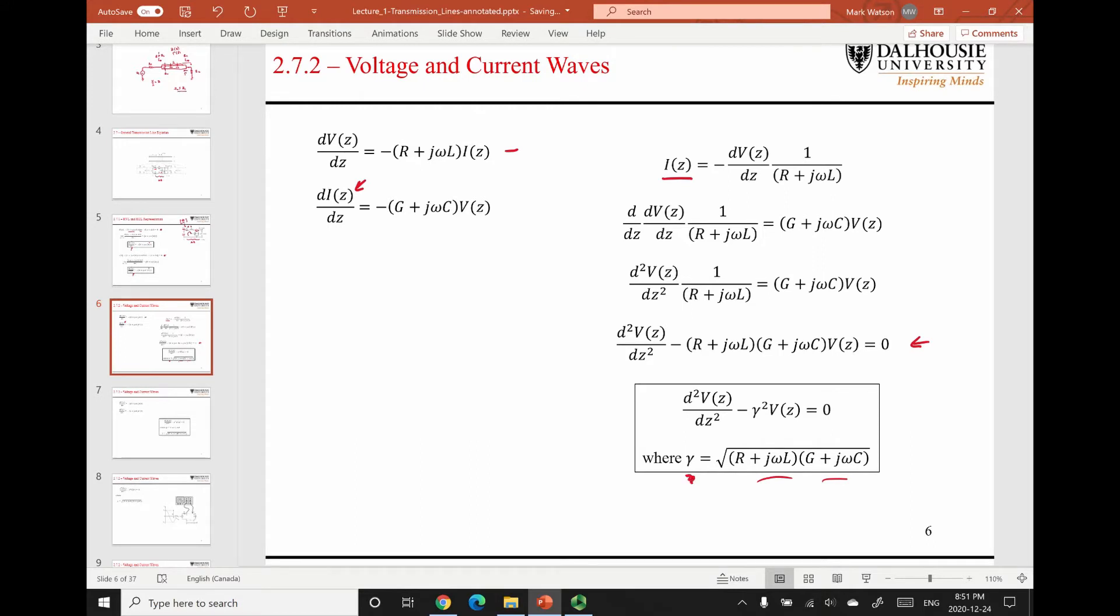So we end up with the phasor wave equation for voltage here. And this term here, gamma, is called the propagation constant. The propagation constant defines the speed of the traveling wave and the wavelength. And we'll see how that's used later on.